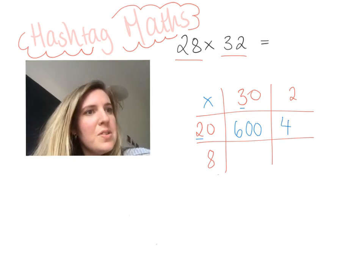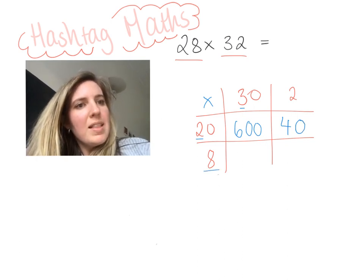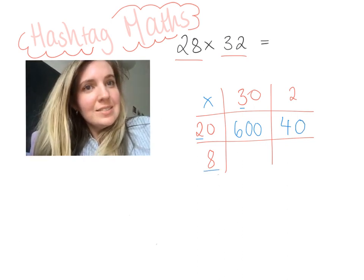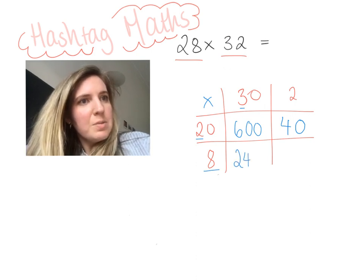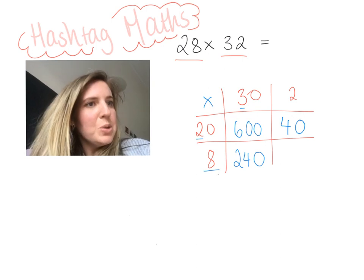Let's keep going. 2 times 2 which is 4, and then I have my 1 zero there. Now I'm on my last row: 8 times 3 is 24. I need one more zero. Fantastic. And then 8 times 2 which is 16.